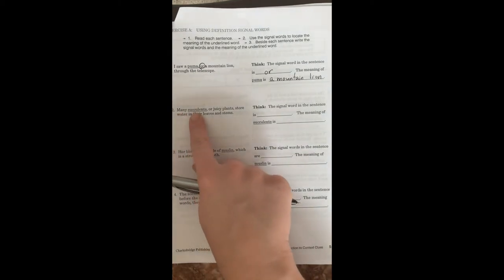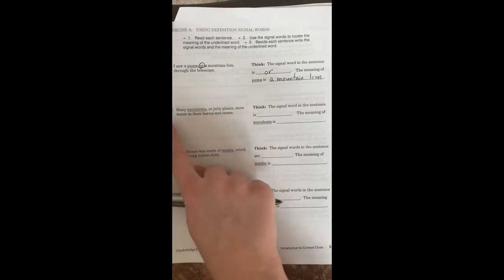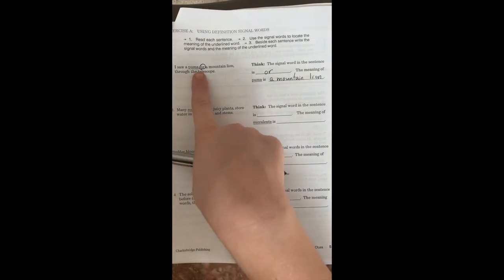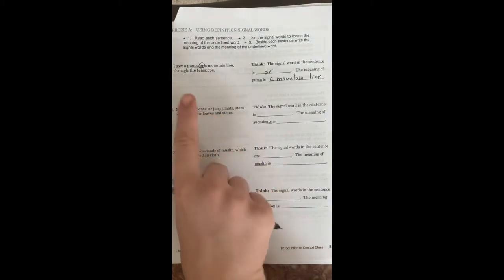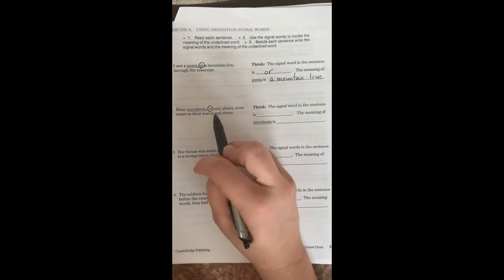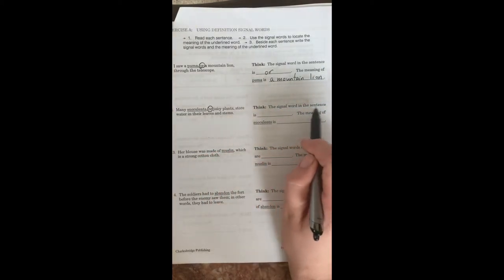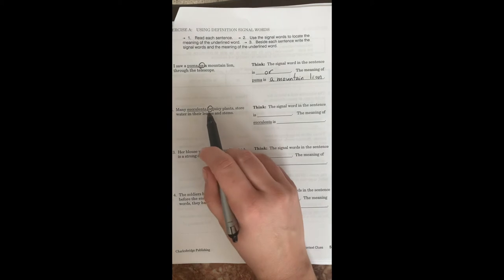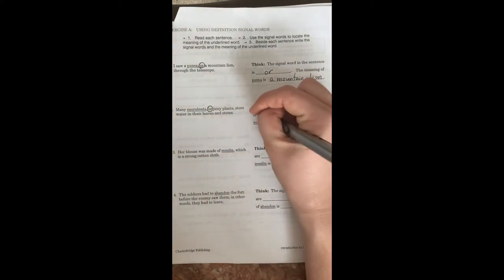Many succulents or juicy plants store water in their leaves and stems. All right. Well, just like the last sentence, we have or. We have or again, so we can circle it. We know that's our signal word for our context clues. So it says the signal word in the sentence is or. Nice and easy.